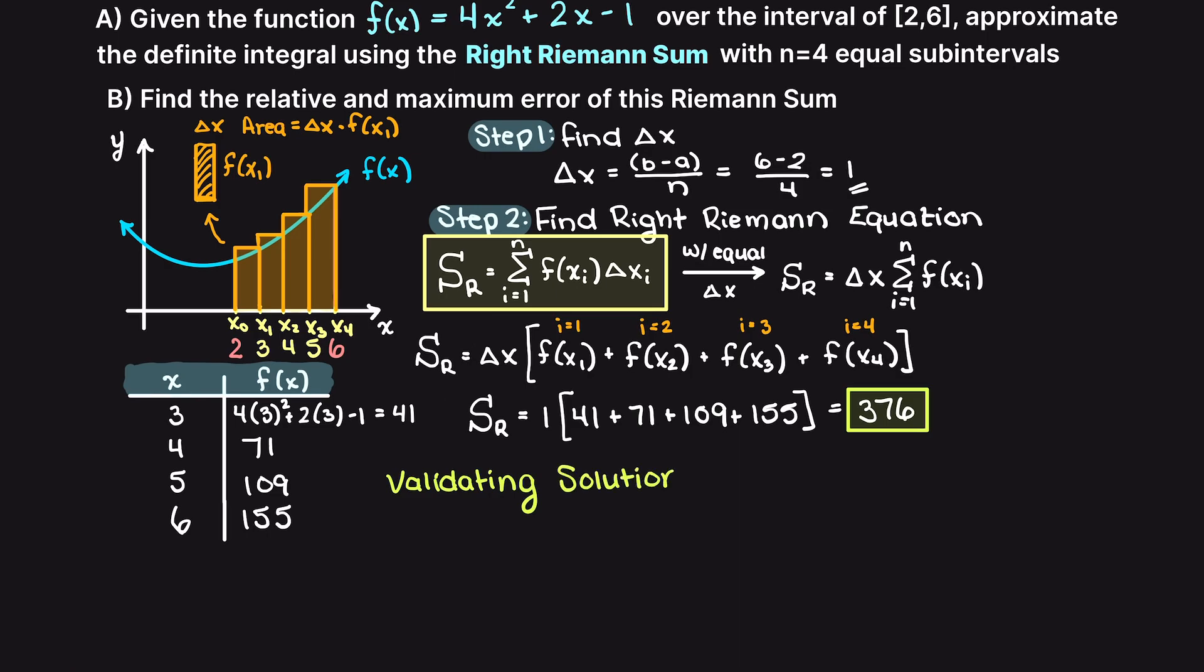For this question, since we have all the relevant information, we can actually check our answer's exact solution using a definite integral calculator online, or just solving it by yourself. Doing so, the analytical solution to this problem is 305.3.